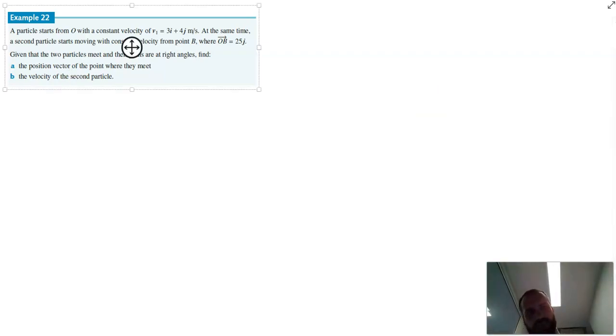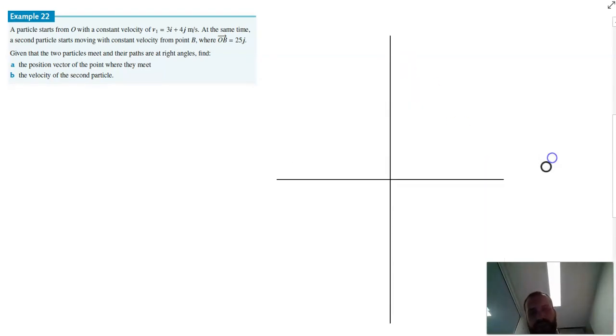So I just want to draw the starting positions just so we get a feel for what's happening. We have a particle starting from the origin with a constant velocity of 3i plus 4j. So it's moving in sort of that direction. Now, there's another object, particle B, that starts from point B, which they're calling 25j. So there's particle B.